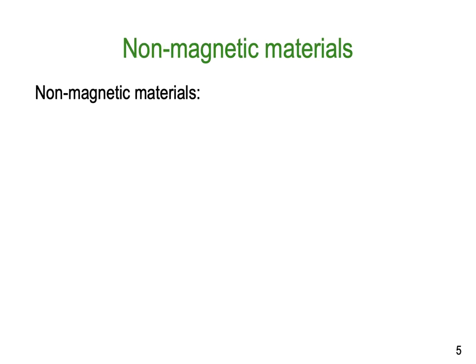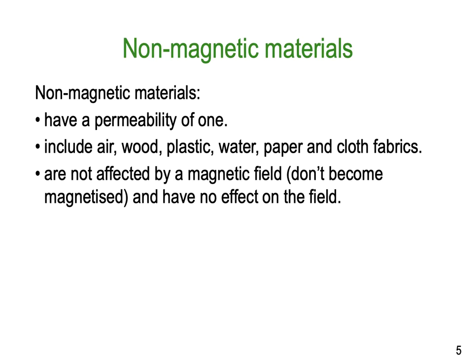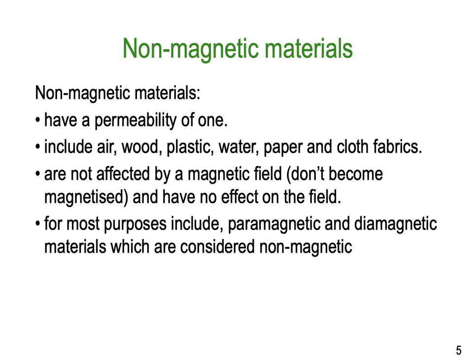Non-magnetic materials are everything left after that. They have a permeability of one and have no effect on a magnetic field. They include air, wood, plastic, water, paper, cloth, and fabrics. They are not affected by a magnetic field — they don't become magnetized either permanently or temporarily — and they have no effect on the magnetic field. For most purposes, paramagnetic and diamagnetic materials are also considered non-magnetic.